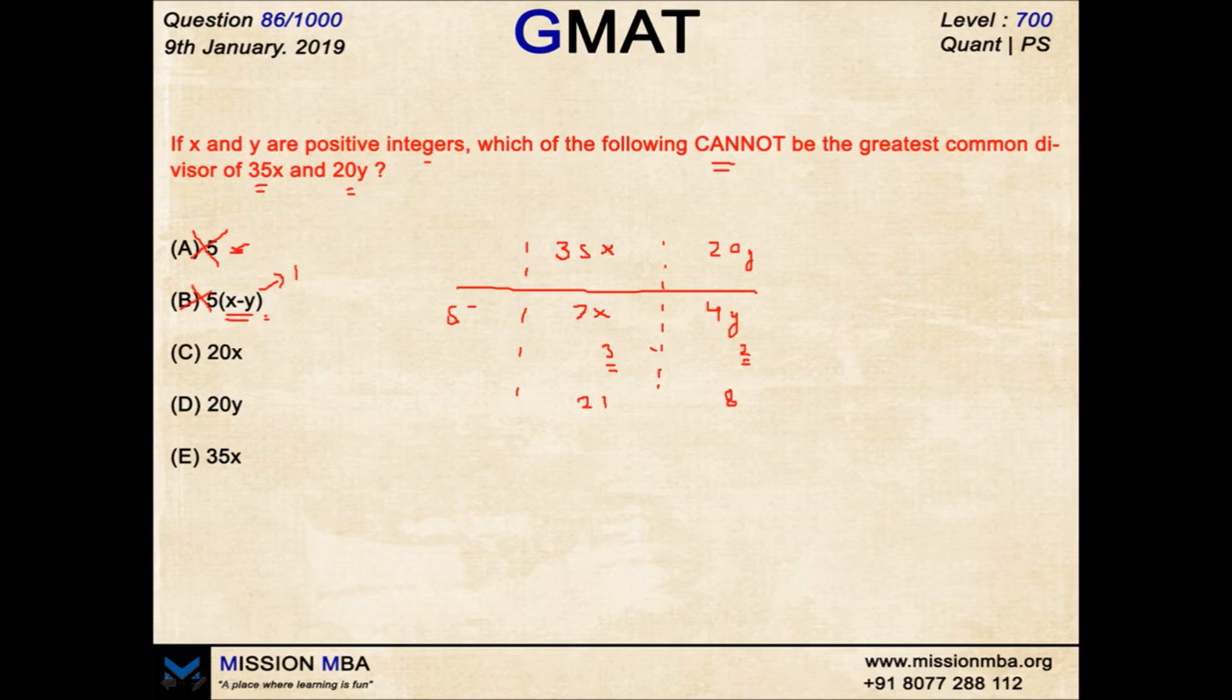Coming to 20X. Now you have 5 taken out already from 35X and 20Y. You are left with 7X and 4Y. You need to take out 4X more in order to make 5 into 20X. So this Y has to be written in the form of KX. If you write down Y in the form of KX for some integer K, you can take out X common. I have 5X out and I have 7 over here and 4K over here. Now I need to take 4 more out. Can I take a 4 more out?